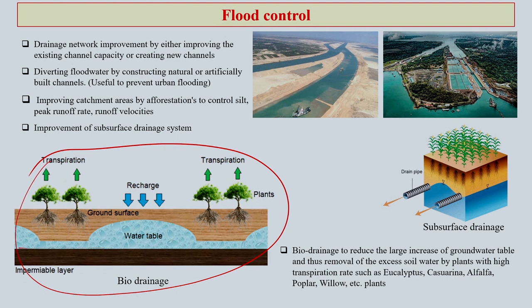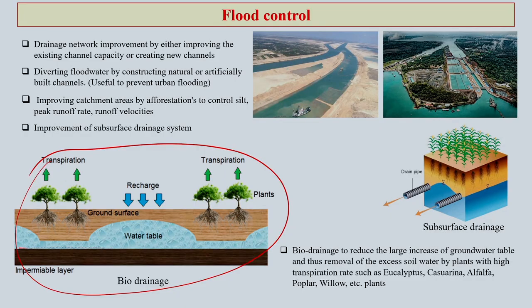Biodrainage also reduces the large increase of groundwater travel and can help in removing excess soil water by plants with high transpiration rates. Species such as eucalyptus, casuarina, alfalfa, poplar, and willow are often used. However, this kind of technology also has to be done with proper investigation at the ground level. Choosing appropriate plants for a particular area is critical, because every plant cannot or should not be used in any area without ground verification.